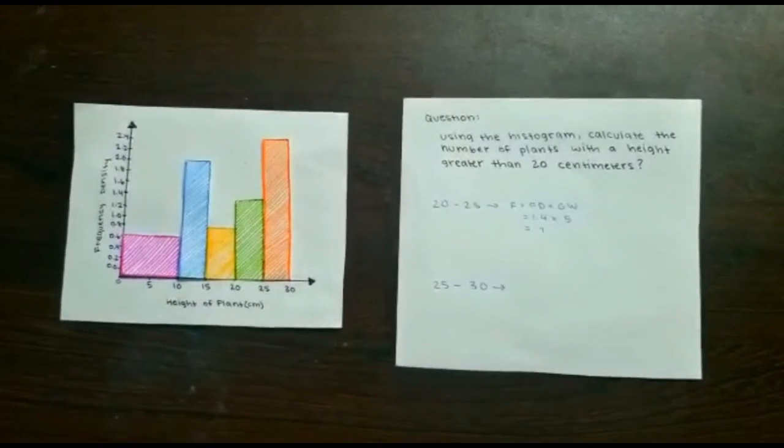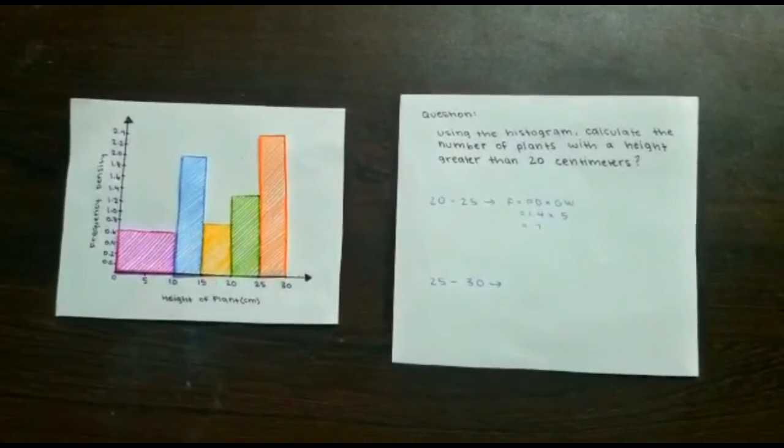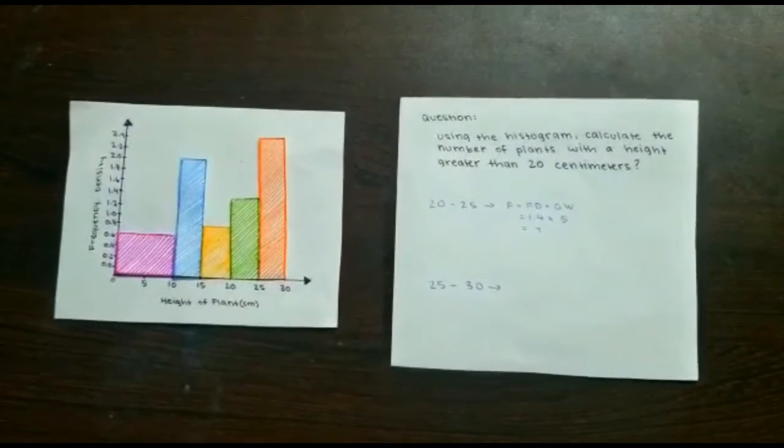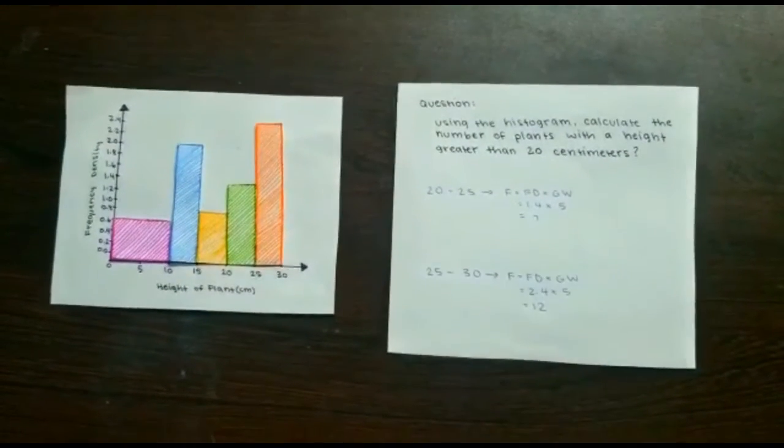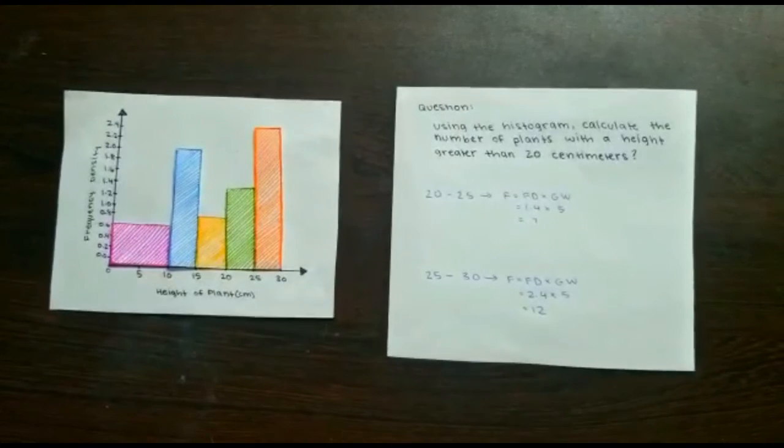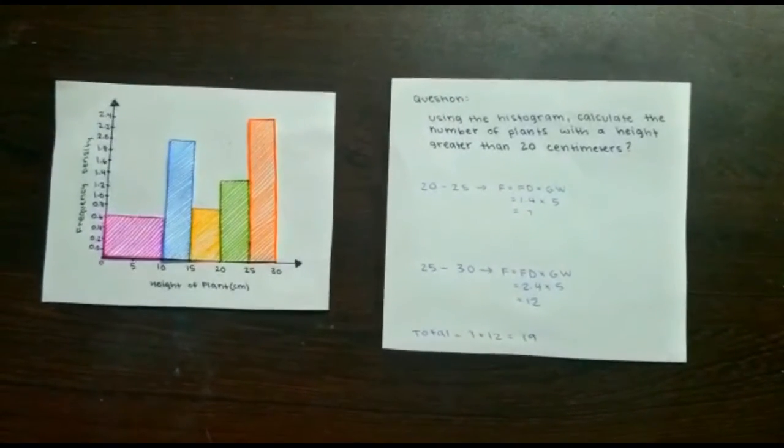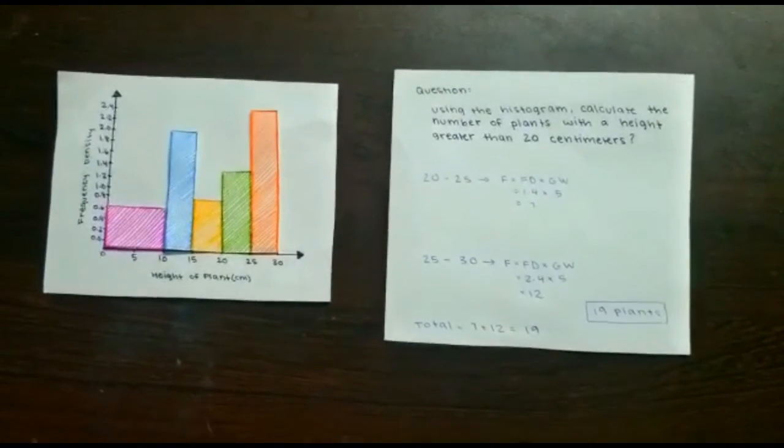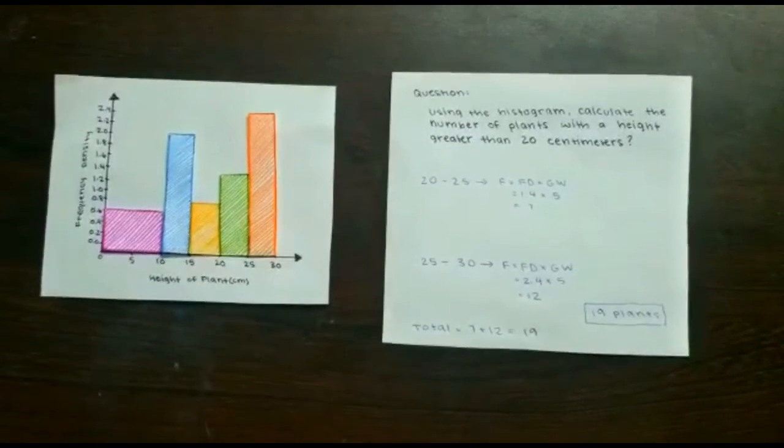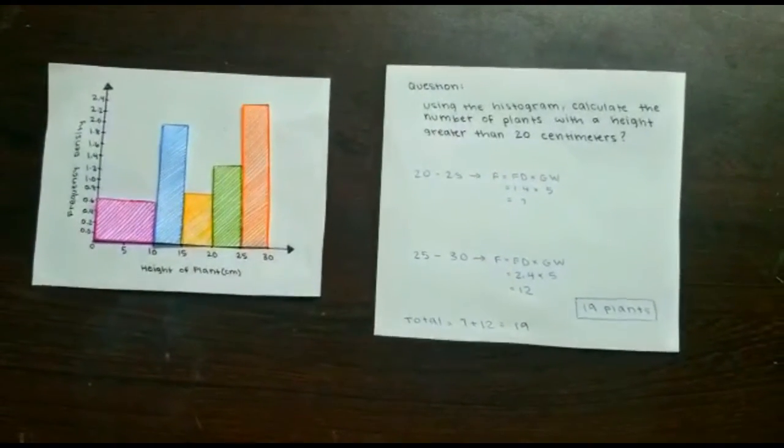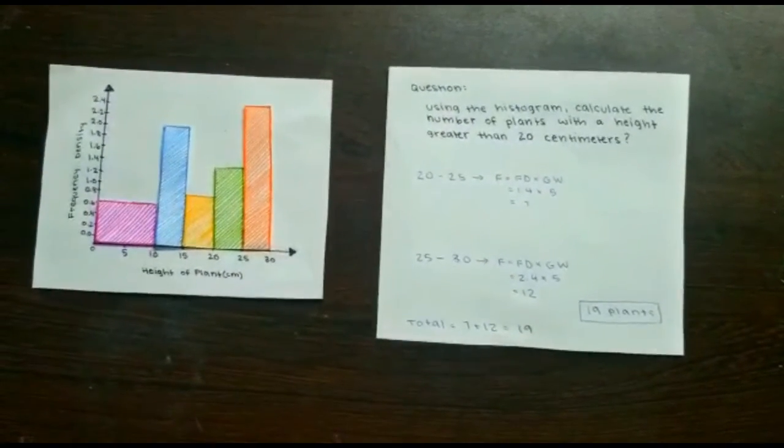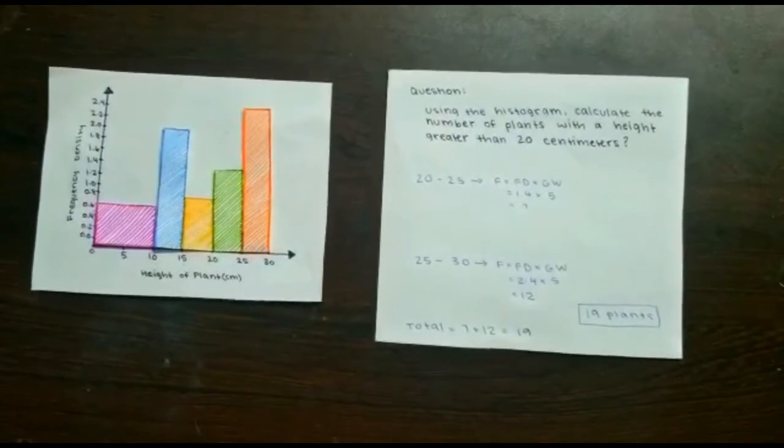For the first one, frequency equals frequency density times group width. The frequency density is 1.4 and the group width is 5, so 1.4 times 5 equals 7. Similarly, for the next group, 2.4 times 5 equals 12. For the total, 12 plus 7 equals 19. So there are 19 plants with a height greater than 20 centimeters.